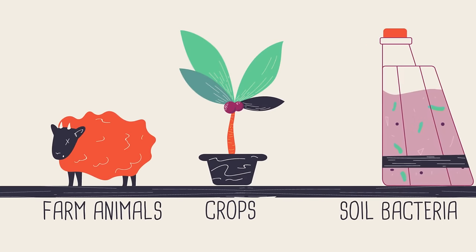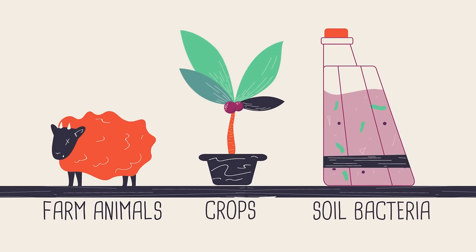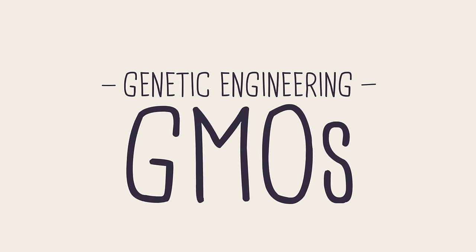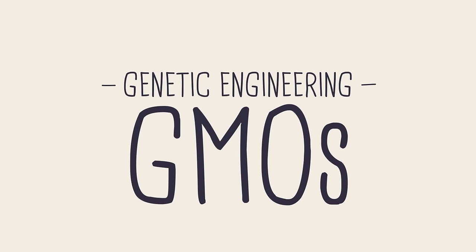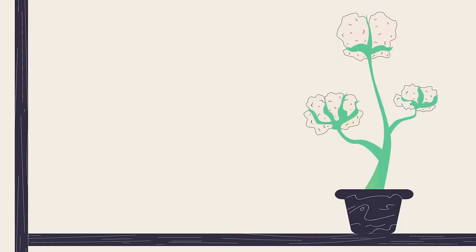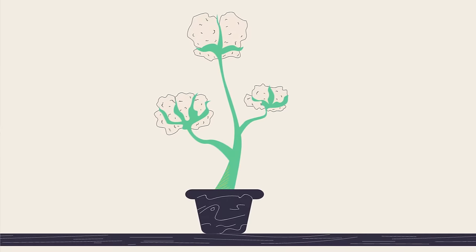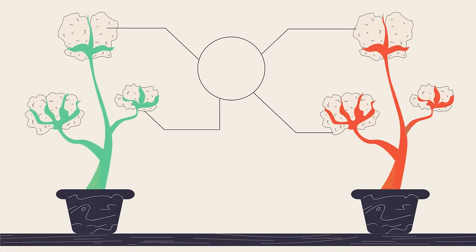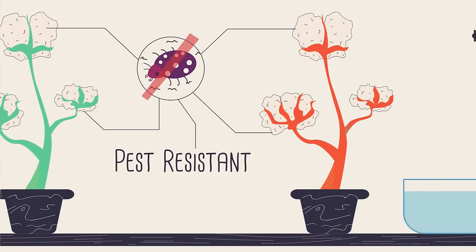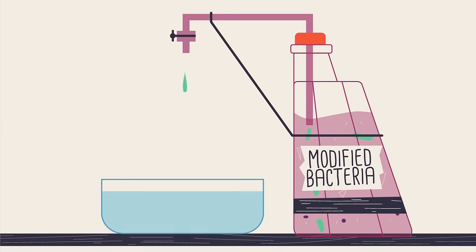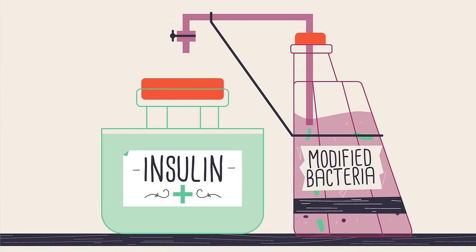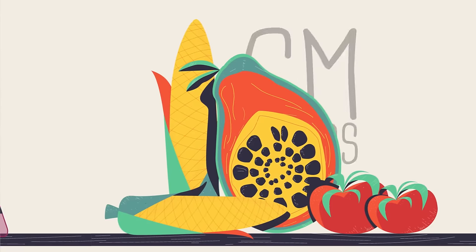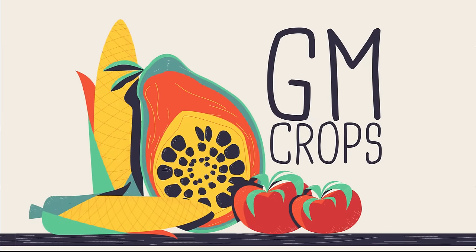Crops, farm animals, and soil bacteria are three of the most common uses of genetic engineering to make GMOs. The cotton plant that grows the cotton for your t-shirt might have been genetically modified to be pest resistant, or bacteria modified to produce life-saving medicines, as well as the better known GM crops that we eat.